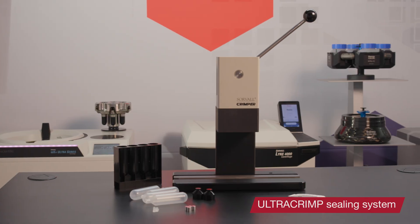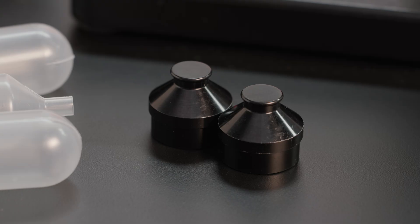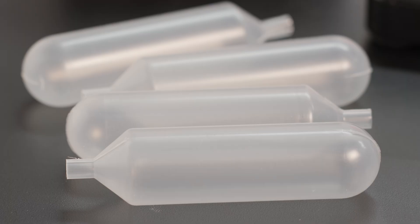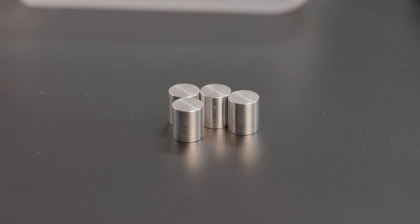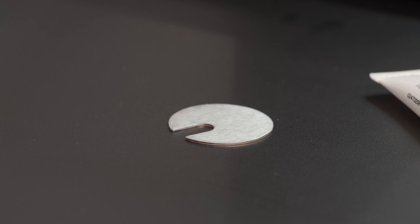The basic ultracrimp system includes the crimper sealing tool, rotor caps, a tube rack, and ultracrimp and clear crimp tubes. Note that the tubes come with tube caps and tube plugs, a tube of lubricant, and a gauge.